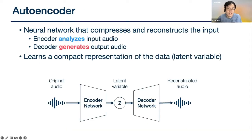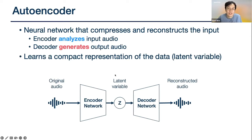What is an autoencoder? Some of you might not be familiar with that, but let me briefly explain: it's a neural network that compresses and reconstructs the input audio. The encoder analyzes the input audio and the decoder generates the output audio based on what the encoder analyzed. What the encoder analyzed is called a latent variable — it's basically a compact representation of the data.